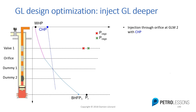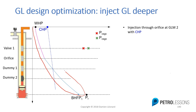In my first case, I have a well equipped with four gas lift modules. The first module is equipped with a gas lift valve, and the second module is equipped with an orifice. The red cross shows the casing closing pressure of gas lift valve number one, and the green cross corresponds to the casing opening pressure of that valve. When I operate that well, the graph shows the pressure profile in my tubing.